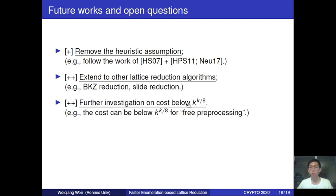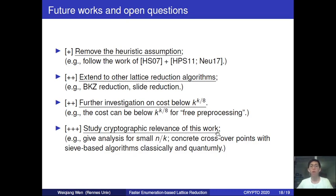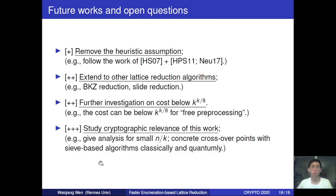Regarding the cryptographic relevance: in this work we already have some experiments for the small n/k region, which corresponds to cryptanalysis of cryptosystems like the NTRU candidates. But we only have simulation results without a formal analysis, so it will be very interesting to see a formal analysis confirming the improvement from k^{k/(2e)} to k^{k/8} for this small n/k region. After that, it would be interesting to determine the new concrete crossover point between our new algorithm and prior ones. This completes my talk and thank you for your attention.